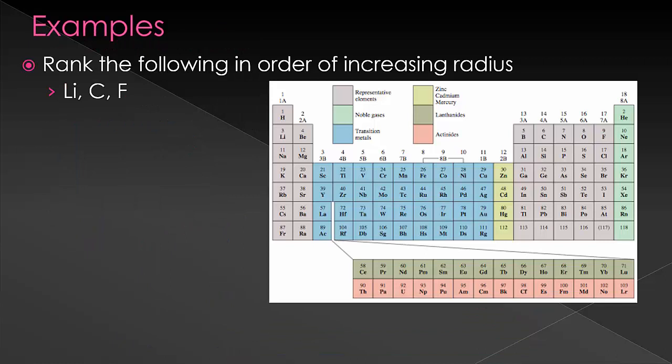Let's do a few ranking examples. We'll start by ranking lithium, carbon, and fluorine. These are all along the second row. Since we know that the trend gets smaller as we go to the right, the furthest to the right will be the smallest. This means that F is smaller than carbon, which is smaller than lithium.